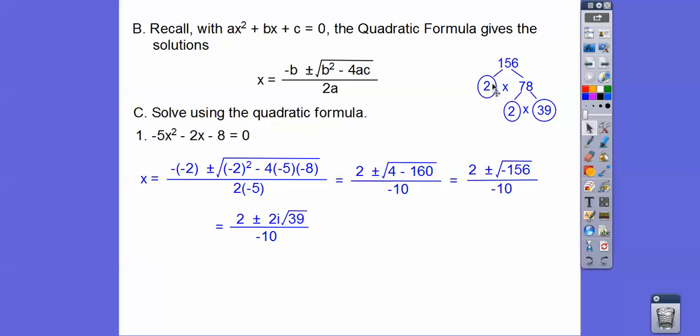So there's 156, 2 times 2 times 39. So a pair of 2s are going to come out. So we get 2i root 39. Remember when we have a square root of a negative, there's an i involved. These, you can divide them all by 2. So this is going to become 1. That's going to become 1. That's going to become negative 5. So there's our answer right there.